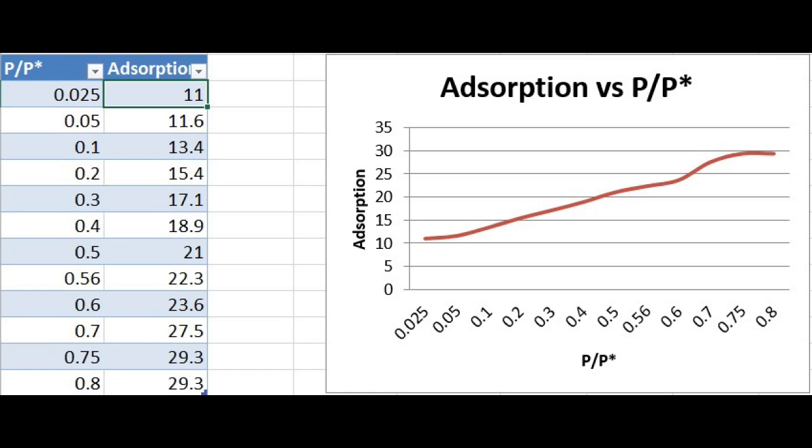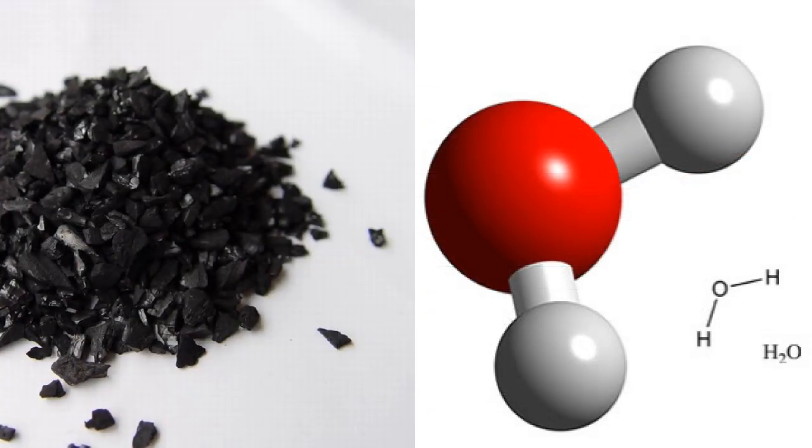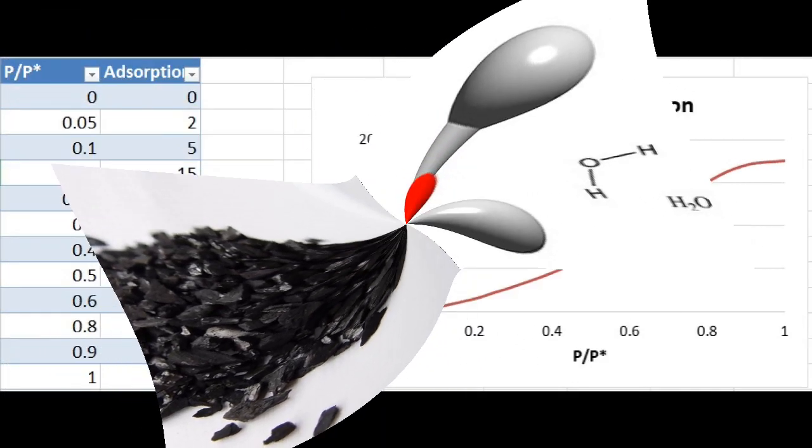And last but not least, the adsorption of water vapor on activated carbon at 1273 Kelvin produces an isotherm with such a shape.